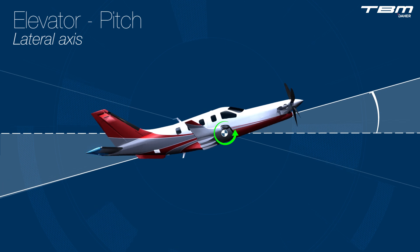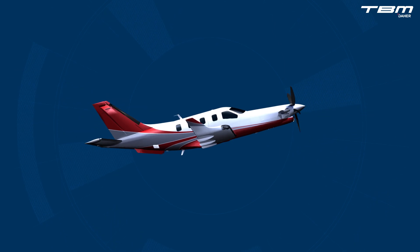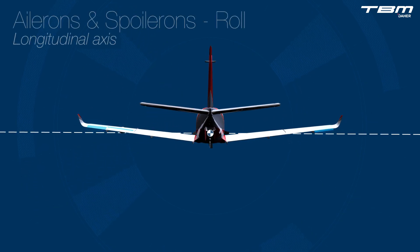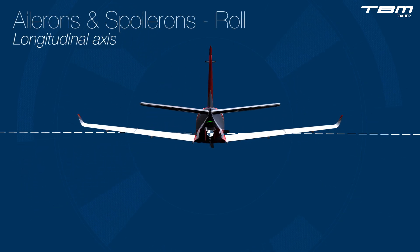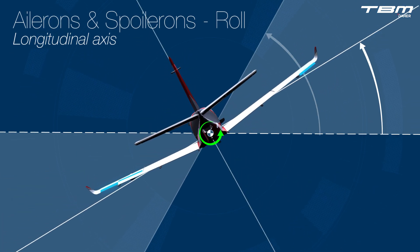The elevator pitches the airplane's nose up and down about the lateral axis. The TBM's ailerons roll the TBM about the longitudinal axis. Integrated spoilerons augment roll control by spoiling the lift on the descending wing and at the same time counteracting adverse yaw created by the lifting aileron.